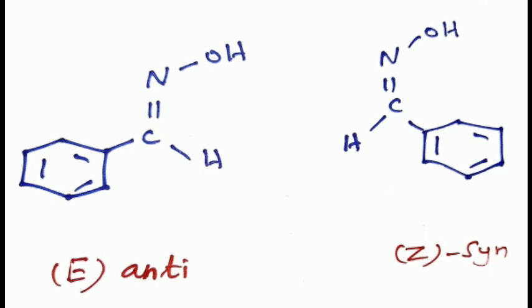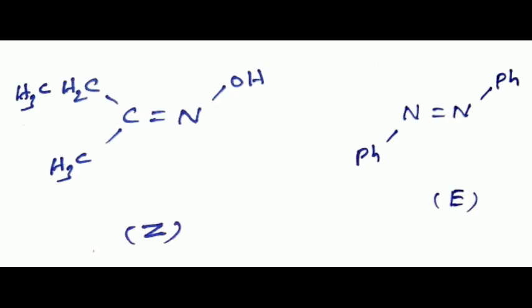Diastereomeric oximes and other nitrogen-containing compounds are also now given E-Z nomenclature. This is the isomer of benzoyl oxime compound. The first one is E anti-form, and the second one is Z syn-form. Similarly, this is butanone oxime: first one is Z butanone oxime, second one is E azobenzene.